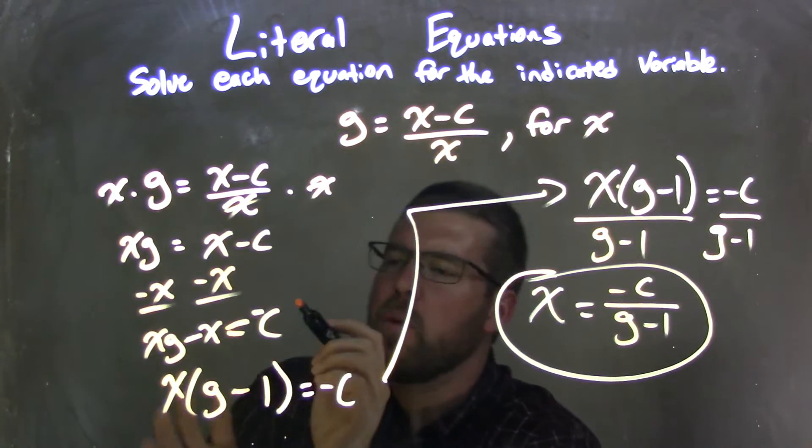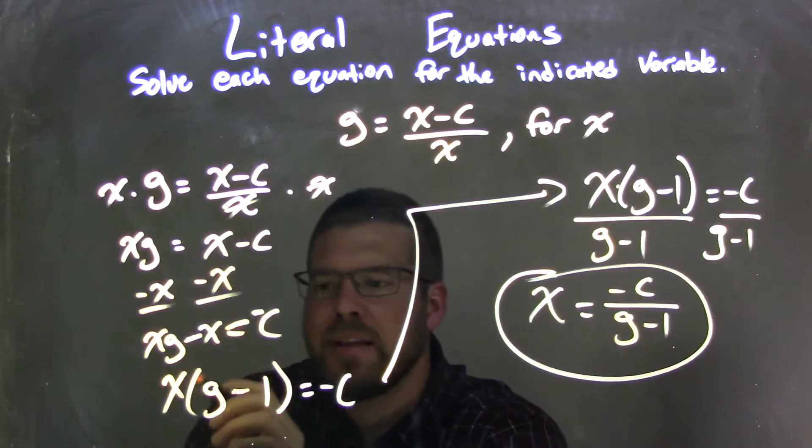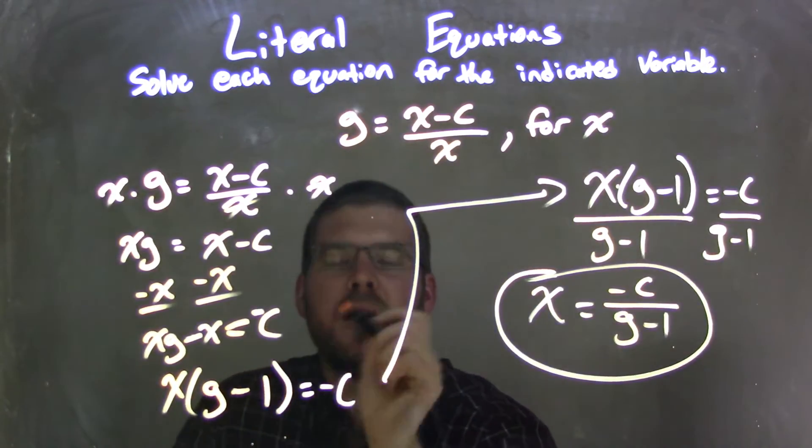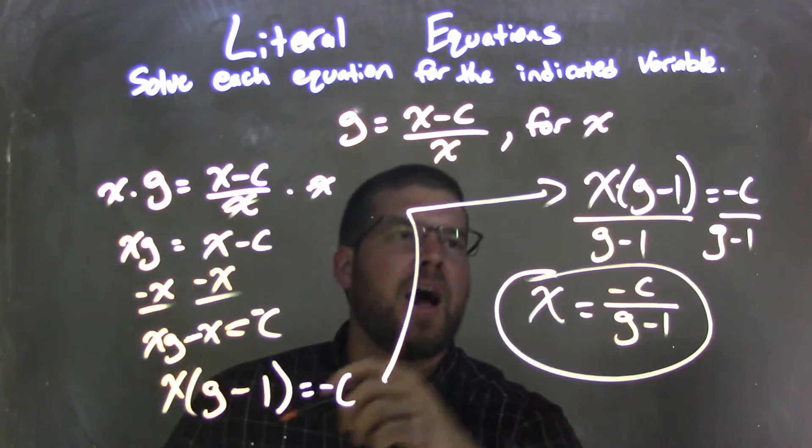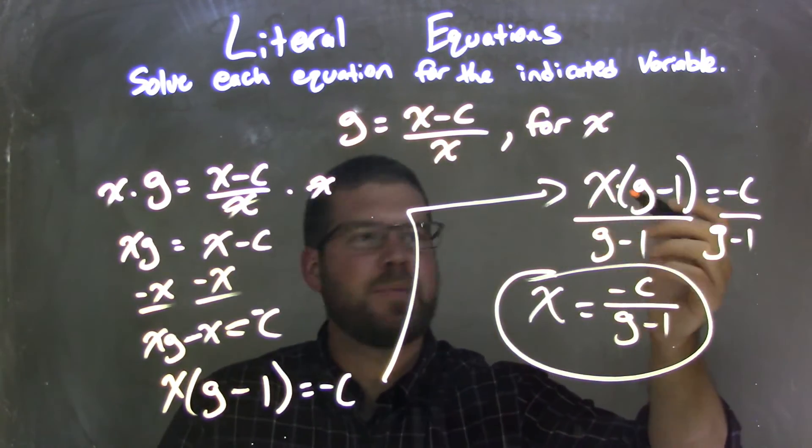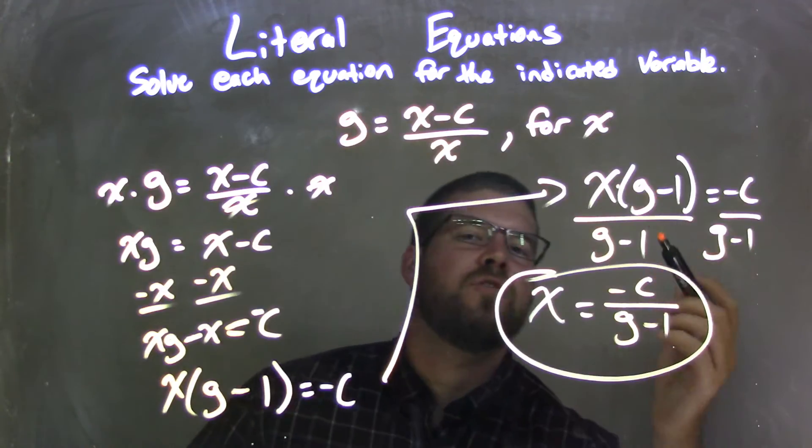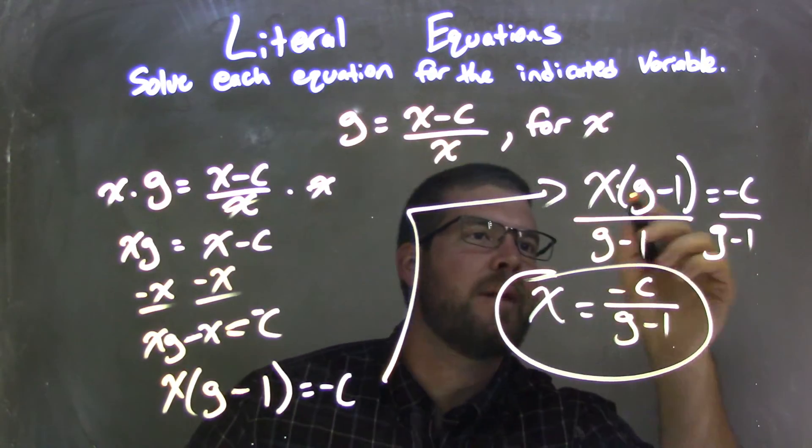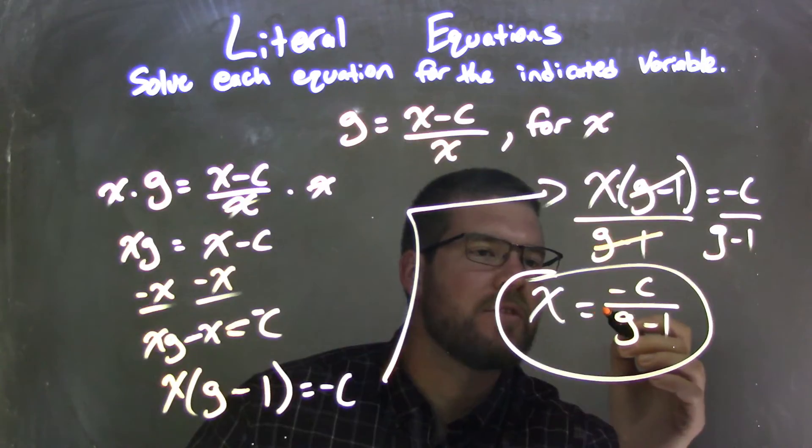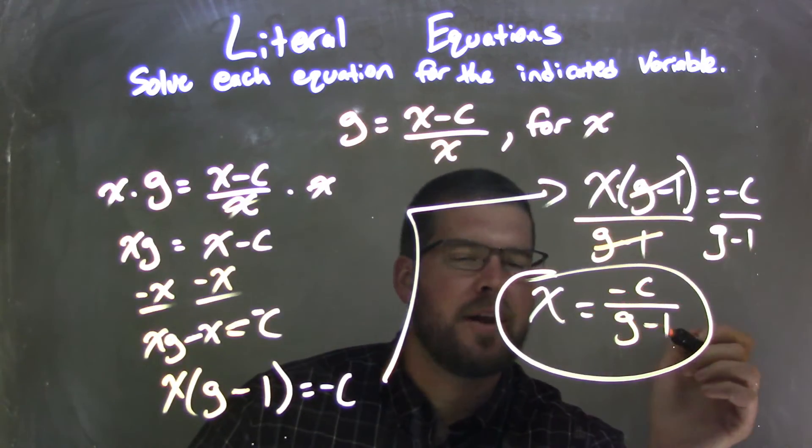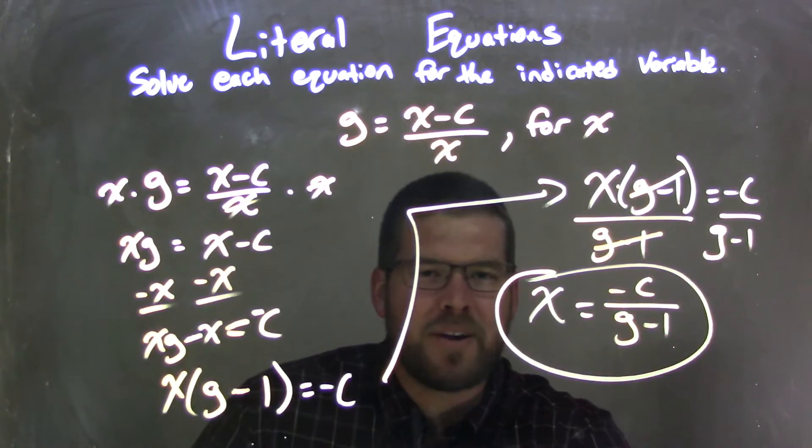From there, I knew I could pull out an x from both parts here, leaving me with x times parentheses g minus 1. That's still equal to negative c. I rewrote it up here for space reasons. Then I divided both sides by g minus 1. That eliminated this g minus 1, leaving me with x equals negative c over g minus 1, which is my final answer.